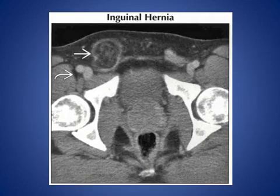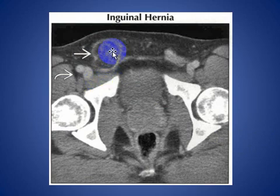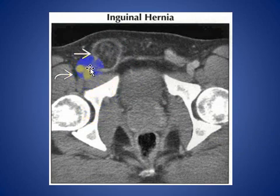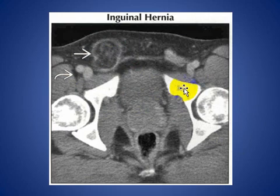As we see here in axial CT scan, inguinal hernia on the right side — it is anterior to the pubic tubercle and it is not compressing the femoral vessels: the artery and the vein. This hernia contains only fat.